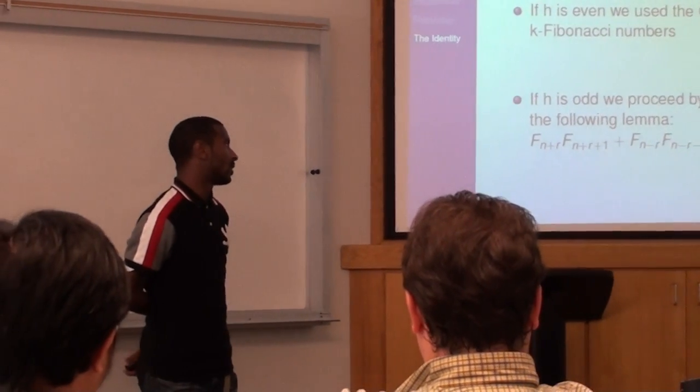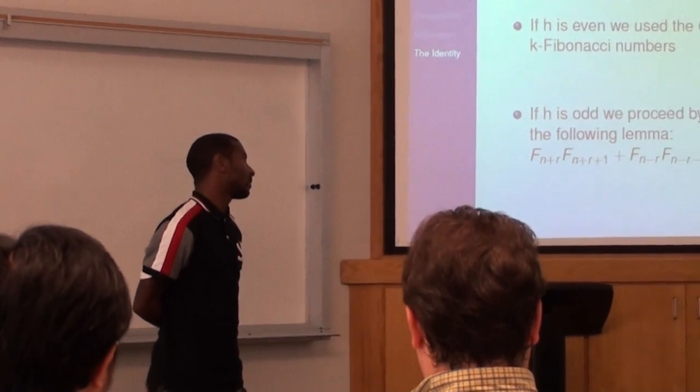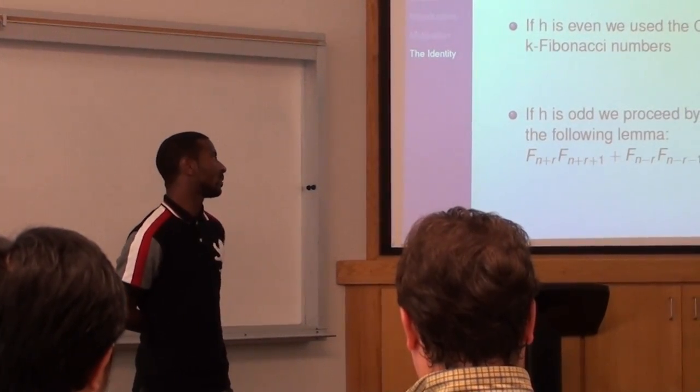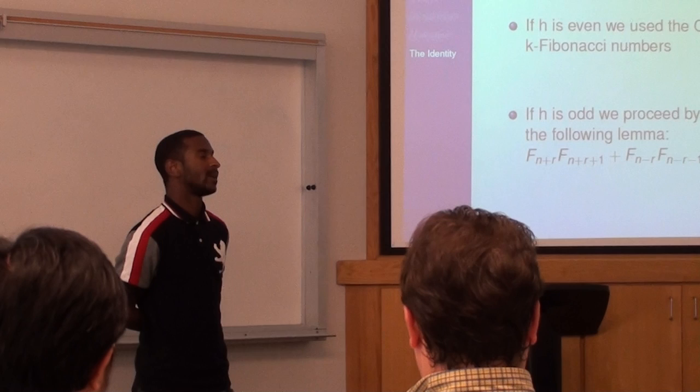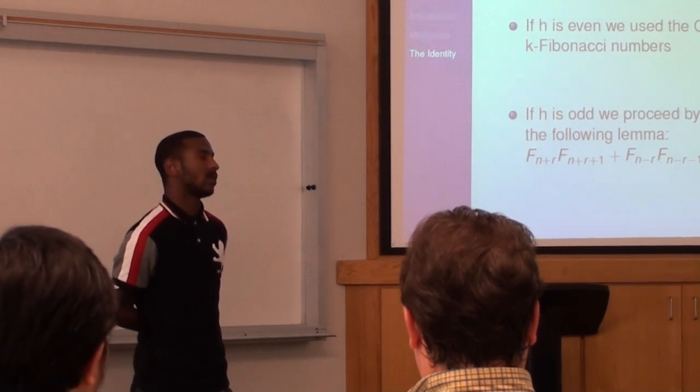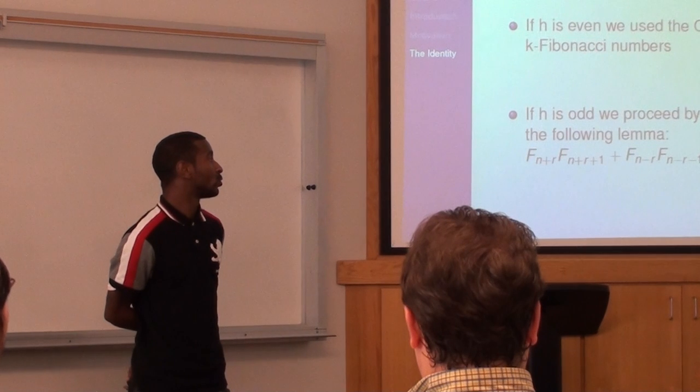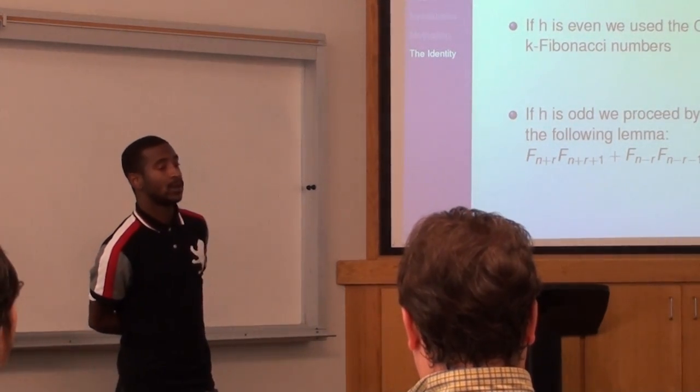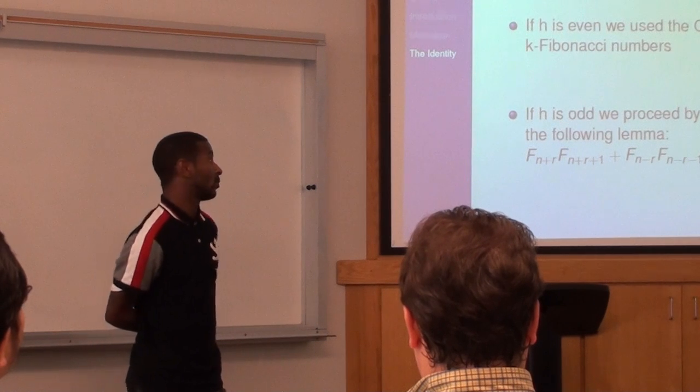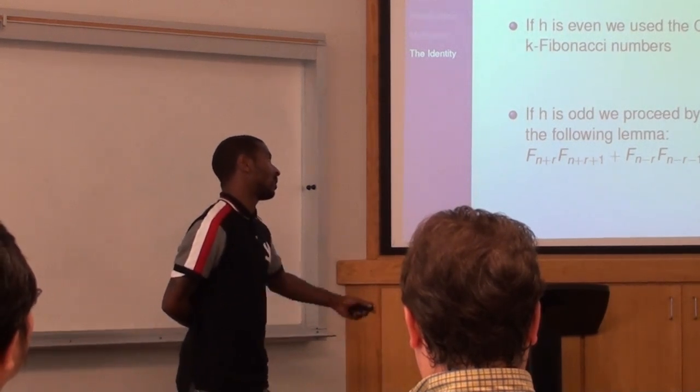After deriving the corollary following the lemma: F_n+R times F_n+R+1 plus F_n-R times F_n-R-1 equals F_2n. And that's how we solve it with the other cases.